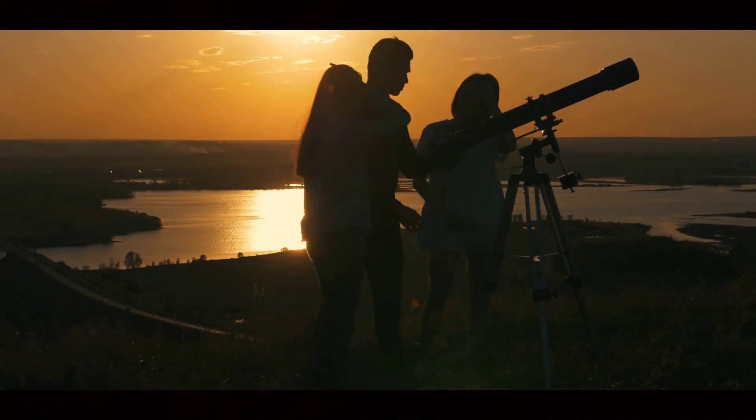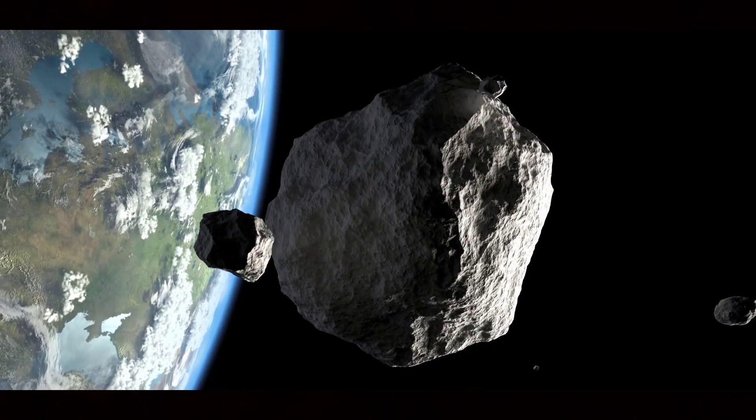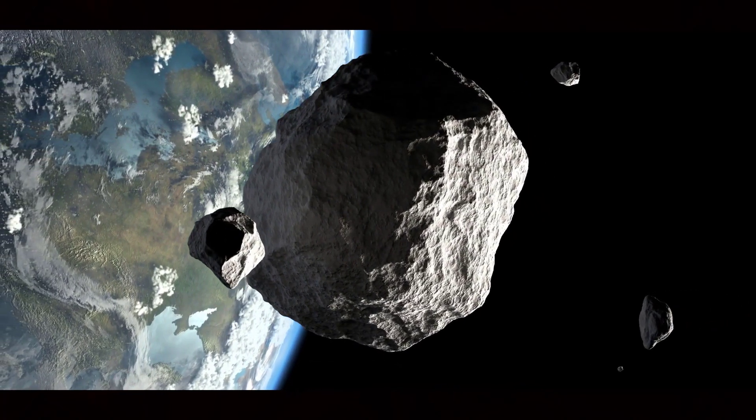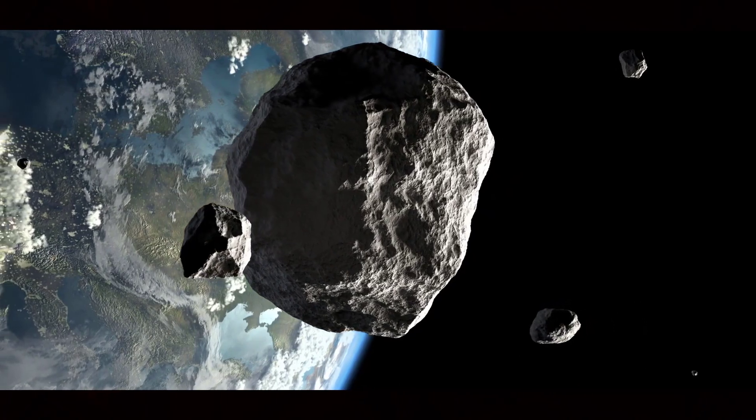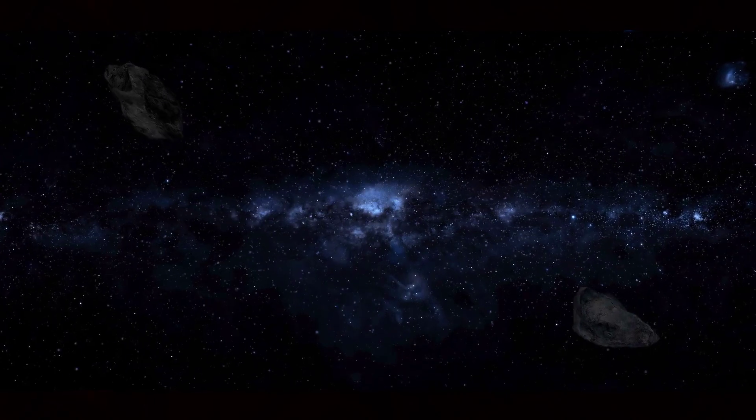The asteroid's closest approach to us is predicted to happen on 29th of April. It will have a visual magnitude of around 10 or 11, and this means that it cannot be seen with the naked eye but rather with at least a 6 to 8 inch telescope. But we do not exactly know its shape and size.